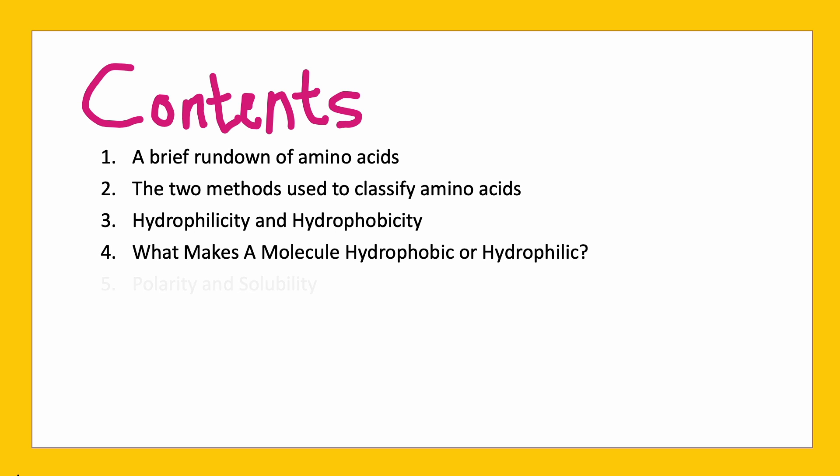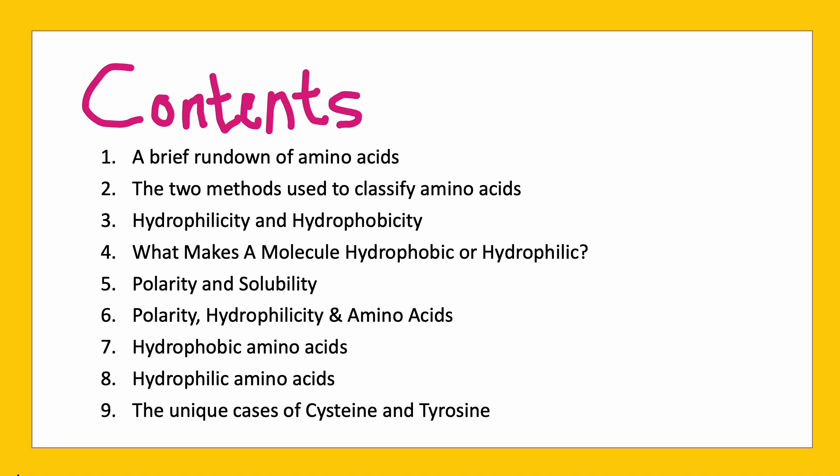As a general overview, we will cover the following topics in this video: a brief rundown of amino acids, the two methods of classifying amino acids, what makes a molecule hydrophobic or hydrophilic, polarity and solubility, hydrophilicity and amino acids, hydrophobic amino acids, hydrophilic amino acids, and the unique cases of cysteine and tyrosine. If you want to skip to a specific part, you can do so by clicking the timestamps found in the description section below.